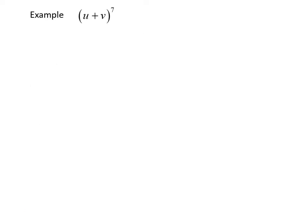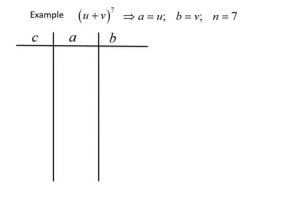For our next example, we want to figure out what (u + v) to the seventh power is. To expand this using the binomial theorem, we start with a table with columns c, a, and b. Our a is u, our b is v, and this time n is equal to 7. Pause the video and take a few moments to figure out the rows of Pascal's triangle that get you up to n equals 7 — on the previous example we only went up to n equals 6, so compute one more row, then resume the lecture.